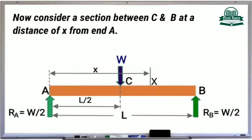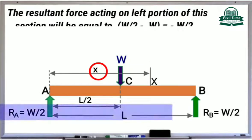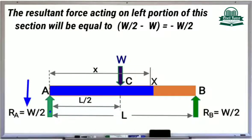Now let us consider a section between C and B at a distance of X from end A. The resultant force acting on the left portion of this section will be equal to this reaction force W by 2 minus this vertical load W, which will be equal to minus W by 2.